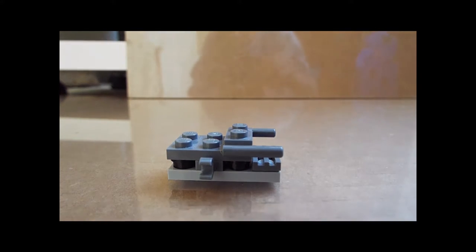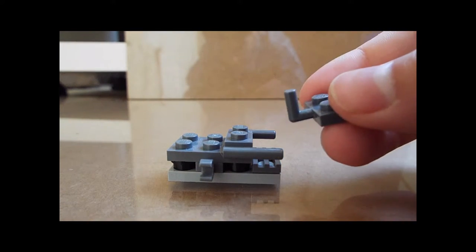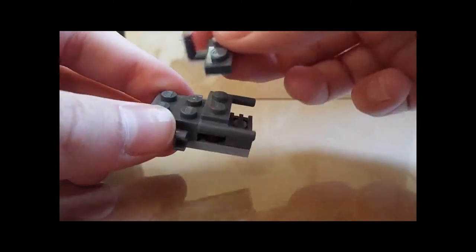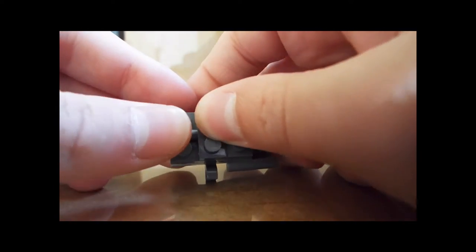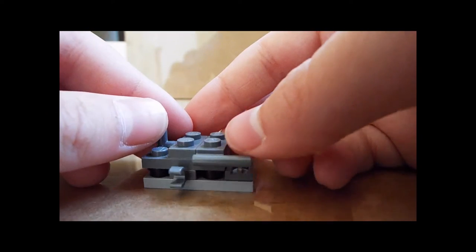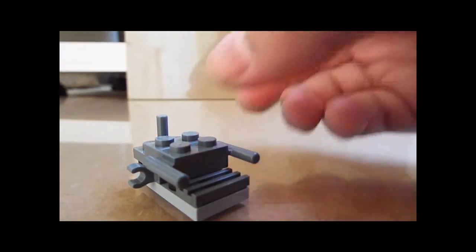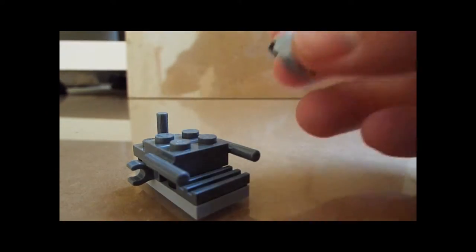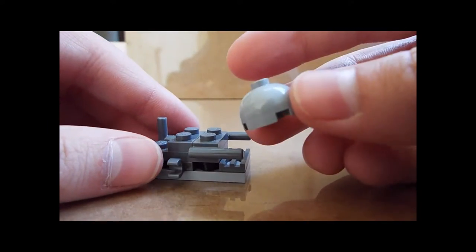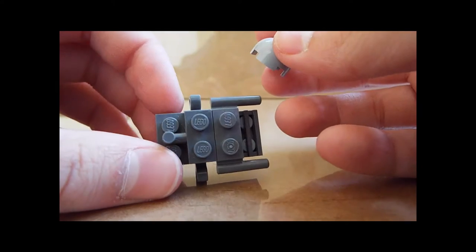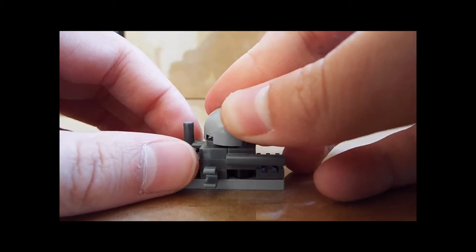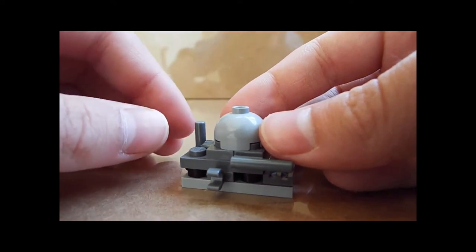Then take this one with the hook back and put it so this part is right in between those two studs. Next, I'm going to take this dome and put it right on these four top studs.